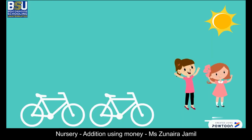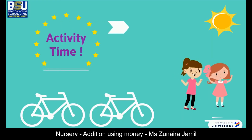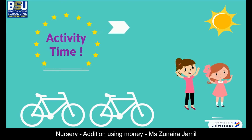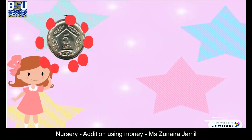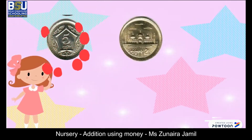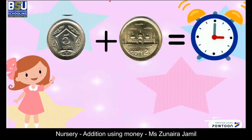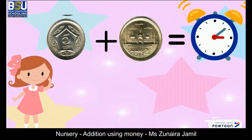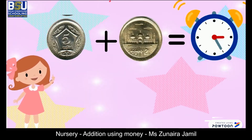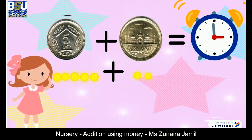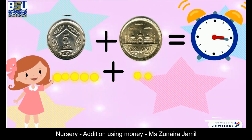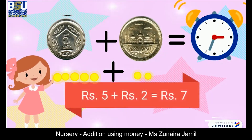It's activity time now. You need to answer one question that I'm just going to ask. Sarah's mummy has given her a 5 rupee coin and a 2 rupee coin. Can you tell me how much money does she have? Thinking time. You can also use the counters if you want. You are right — 5 rupees plus 2 rupees equals 7 rupees.